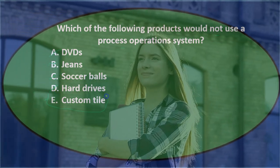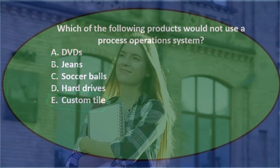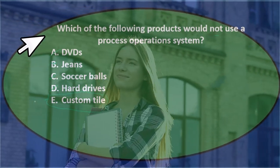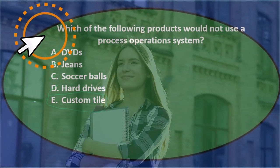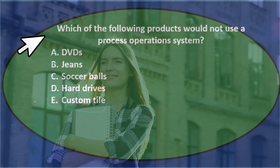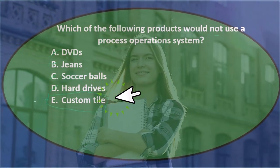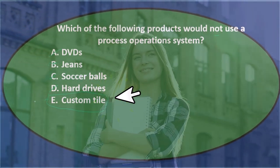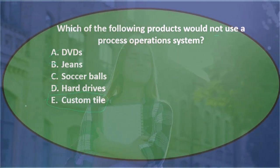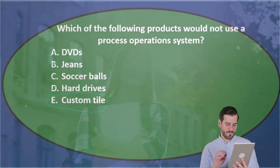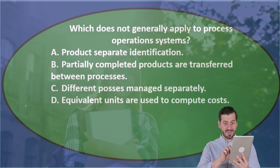Custom tile — note that anything labeled 'custom' when you're making inventory indicates a job cost system, because it's clearly going to be custom and unique. So of the two remaining, I would choose custom tile over jeans. Jeans would be processed, and E — custom tile — would be our answer. The word 'custom' really stands out and makes that a fairly easy choice.